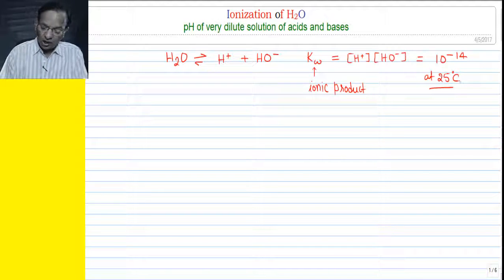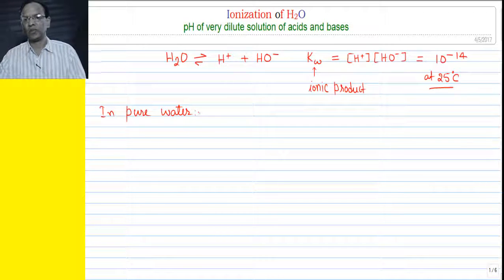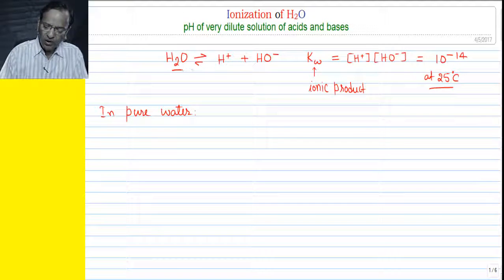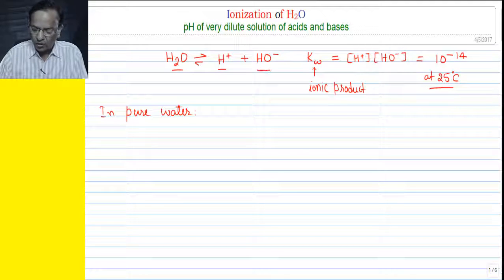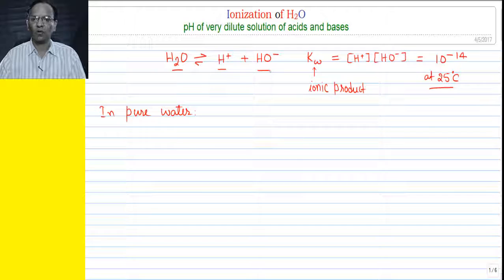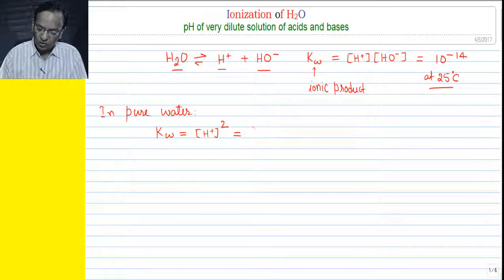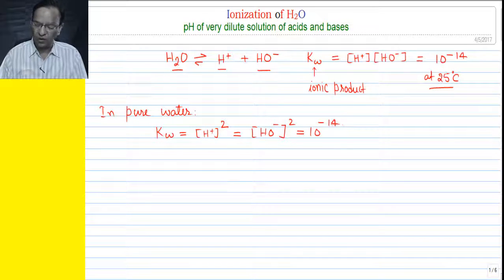In pure water there is no other source of H⁺ and OH⁻. Two molecules of water on ionization will give two hydrogen ions and two hydroxide ions, so in pure water the concentration of H⁺ and OH⁻ will always be equal. Therefore Kw can be written as [H⁺]² = 10⁻¹⁴ at 25°C.